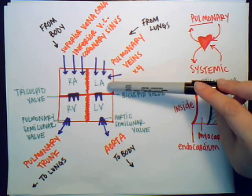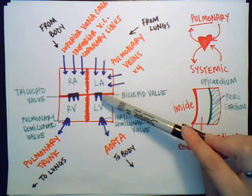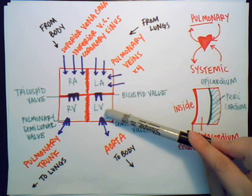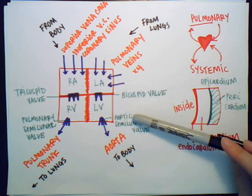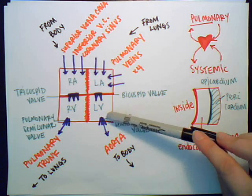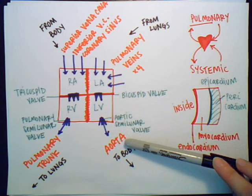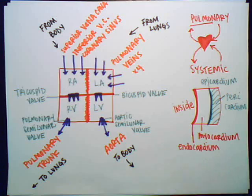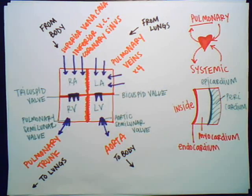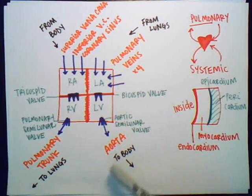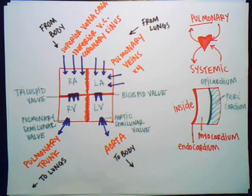From the left atrium we go through the bicuspid valve into the left ventricle, then through the aortic semilunar valve via the aorta to the rest of the body. There will be another video covering the names of all the different vessels that branch off from the aorta and the vena cava.